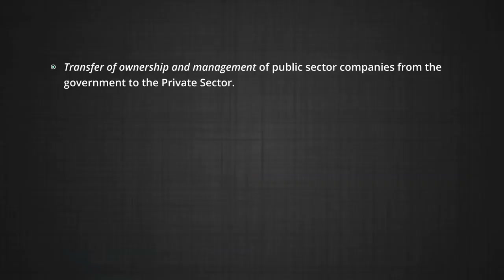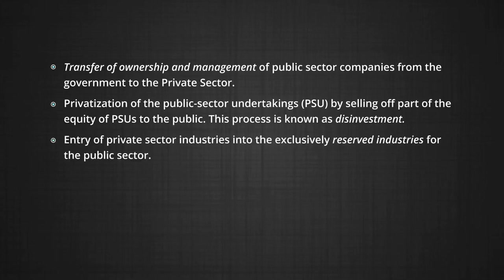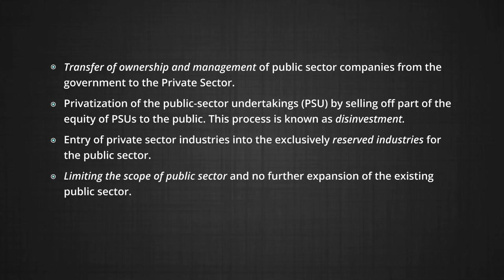Privatization can be done in the following ways. Number one: transfer of ownership and management of public sector companies from the government to the private sector. Number two: privatization of the public sector by selling part of the equity of PSUs, that is public sector units, to the public — this process is known as disinvestment.